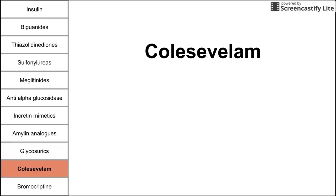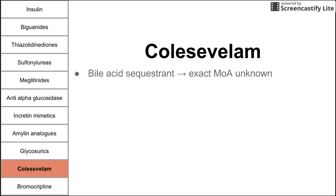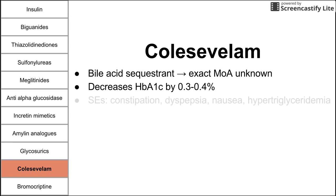Next is colesevelam, a bile acid sequestrant that is not primarily used for diabetes but is approved for it. Its exact mechanism in diabetes is unknown. It decreases HbA1c by a very modest 0.3 to 0.4%, making it one of the weakest on this list. Side effects include constipation, dyspepsia, nausea, and hypertriglyceridemia.